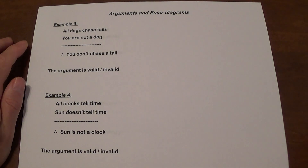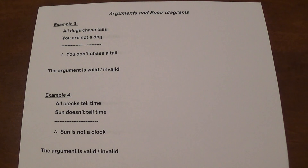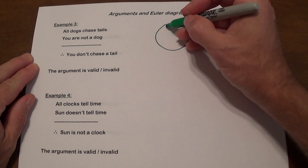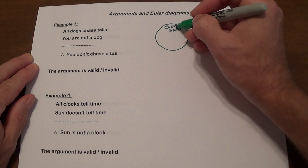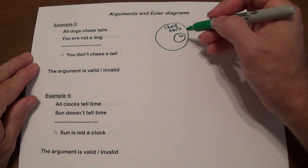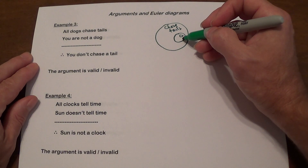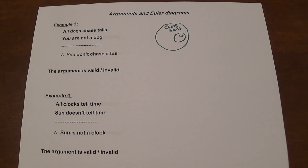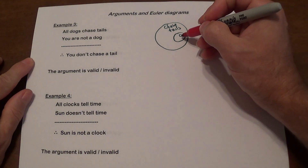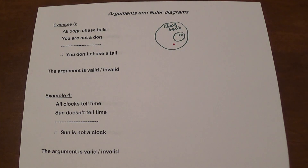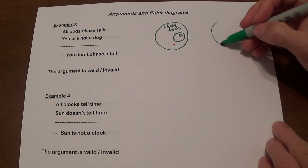Moving on: all dogs chase tails, you are not a dog, therefore you don't chase a tail. Since all dogs chase tails, we draw a large circle representing tail chasers, and a circle for dogs entirely inside it. You are not a dog — so where are you located? You could be here inside the tail chasers circle, meaning even though you're not a dog, you're still a tail chaser.